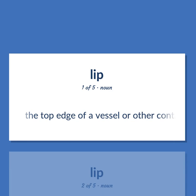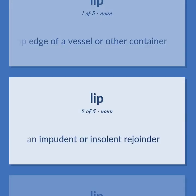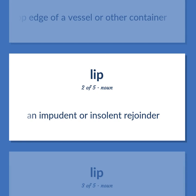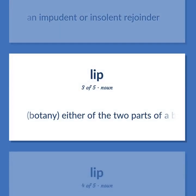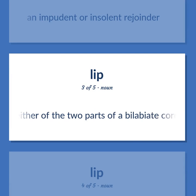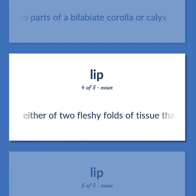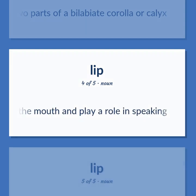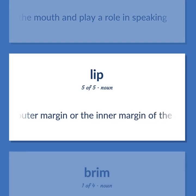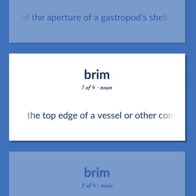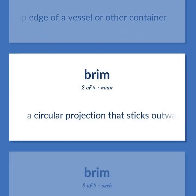Lip: The top edge of a vessel or other container. An impudent or insolent rejoinder. Botany: either of the two parts of a bilabiate corolla or calyx. Either of two fleshy folds of tissue that surround the mouth and play a role in speaking. Either the outer margin or the inner margin of the aperture of a gastropod's shell. The top edge of a vessel or other container.